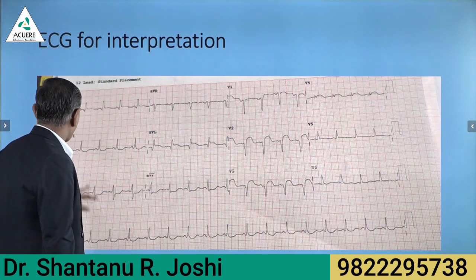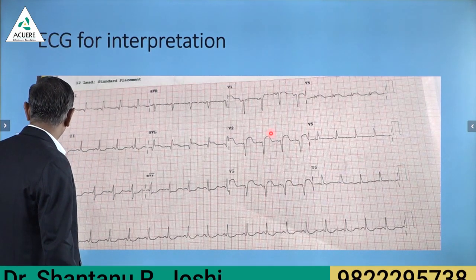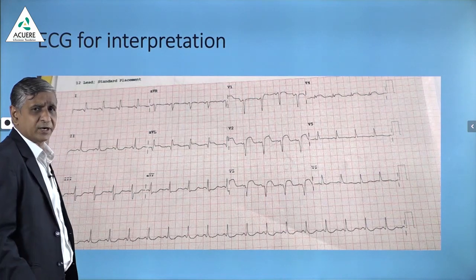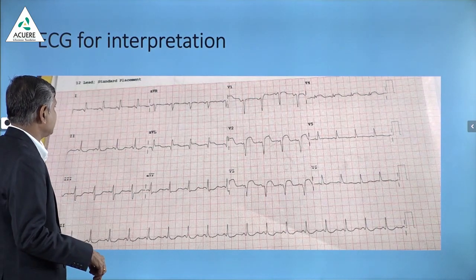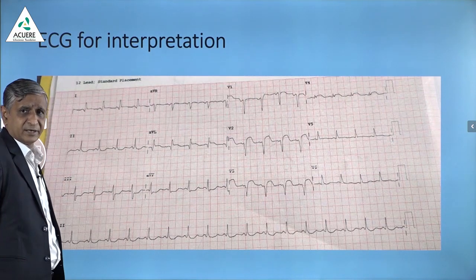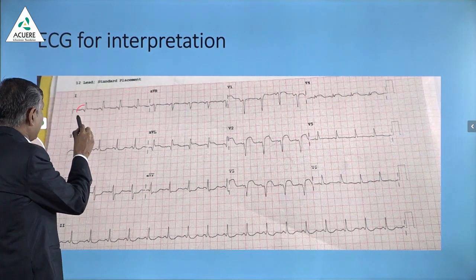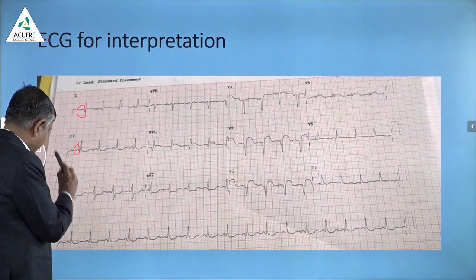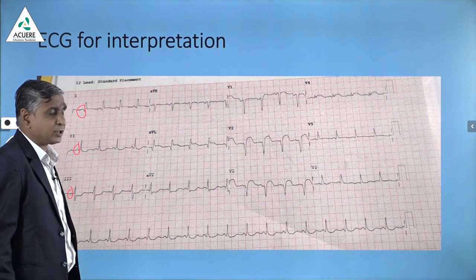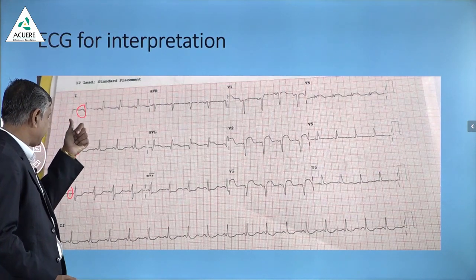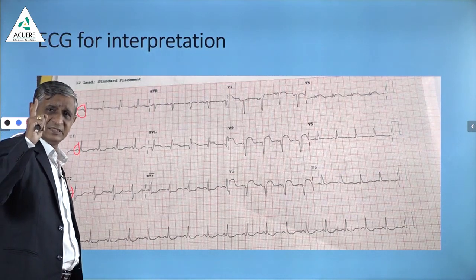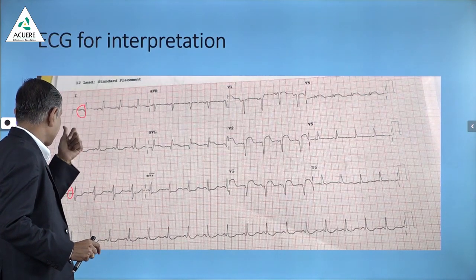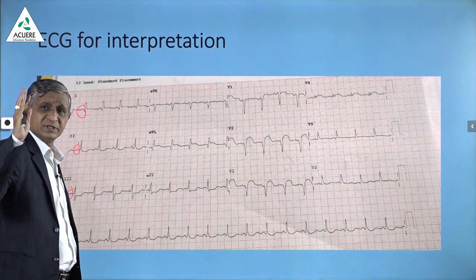Now I am going to comment on this ECG. But before making any major comment, every student should note that every time when you see an ECG, the first and important thing you should look at is the P wave. If you find the P wave and it seems to be normal, then you should say that the heart is beating in sinus rhythm. This is the first conclusion of this ECG — the heart is beating in sinus rhythm because P waves are normal.